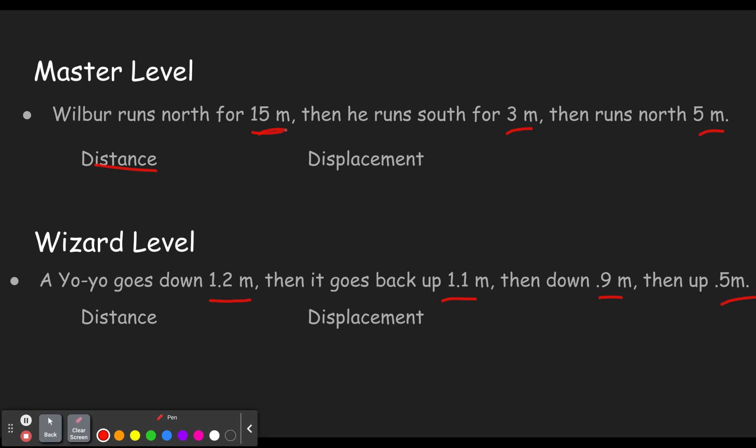Remember for distance, we just add them all up. 15 plus 3 plus 5 gives us 23 meters. Displacement, on the other hand, we have to pay attention to where it's going. It goes 15 north, then it goes 3 south, 3 meters south, and then it goes 5 meters north. It ends up 17 meters north of where it started. How did I get that? We'll consider up our positive direction. We have positive 15, negative 3, positive 5. 15 plus 5 is 20 minus 3 is 17 meters north.